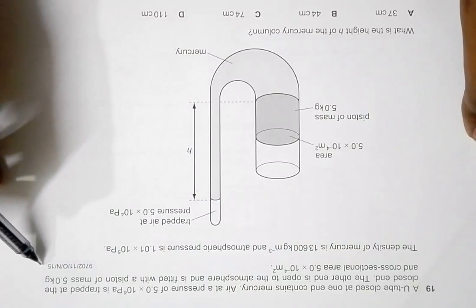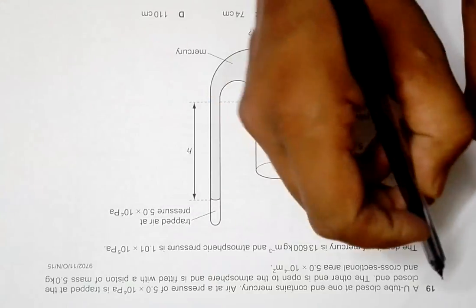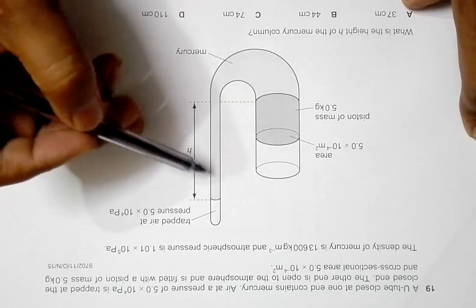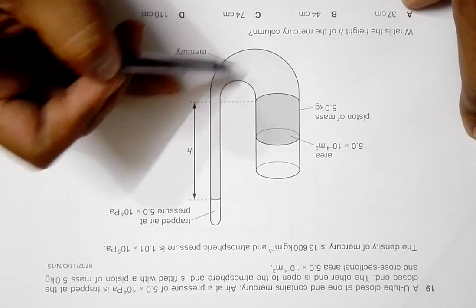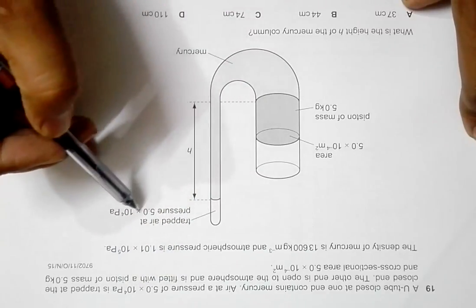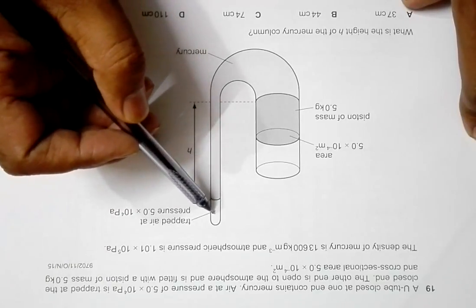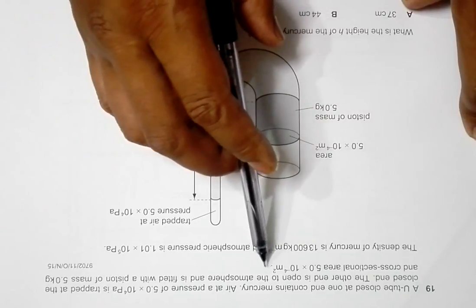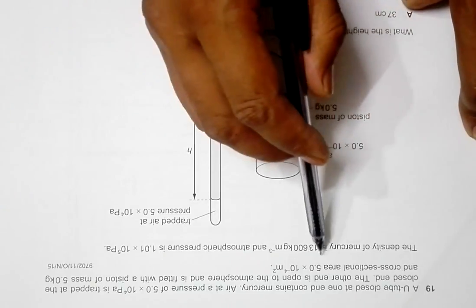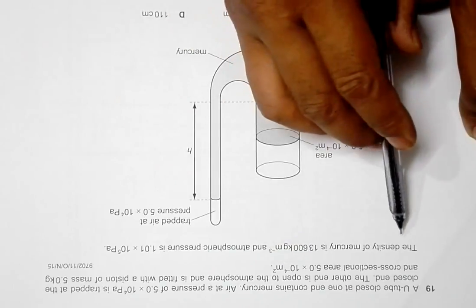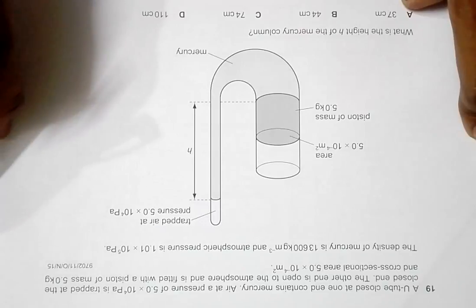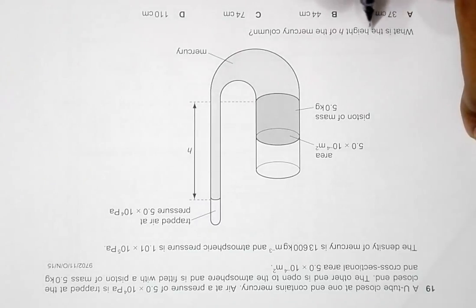This is question 19 from the 2015 October/November Paper 1. The question involves a U-shaped tube closed at one end containing mercury, with air trapped at the closed end at a pressure of 5.1×10⁴ Pa. The other end is open to the atmosphere and fitted with a piston of mass 5.0 kg and cross-sectional area 5.0×10⁻⁴ m². The density of mercury is 13600 kg/m³ and atmospheric pressure is 1.01×10⁵ Pa. We need to find the height h of the mercury column.